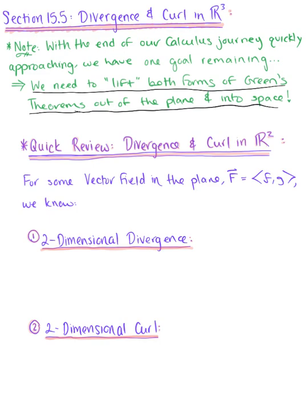Let's begin with a quick review of divergence and curl in the plane. For some vector field F, we know that our two-dimensional divergence is defined as the partial derivative of F with respect to x plus the partial derivative of G with respect to y.